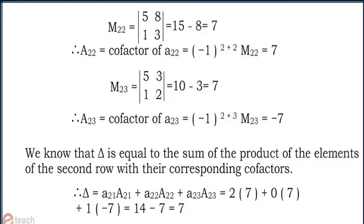Determinant equals 2 into 7 plus 0 into 7 plus 1 into minus 7, which equals 7.